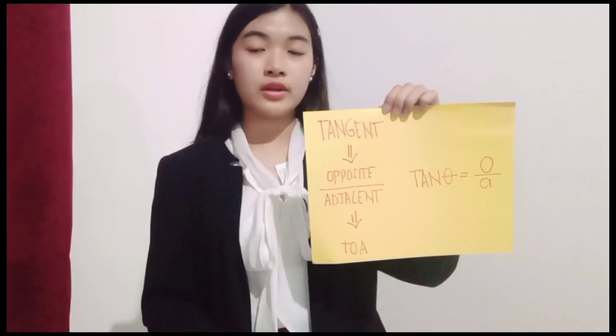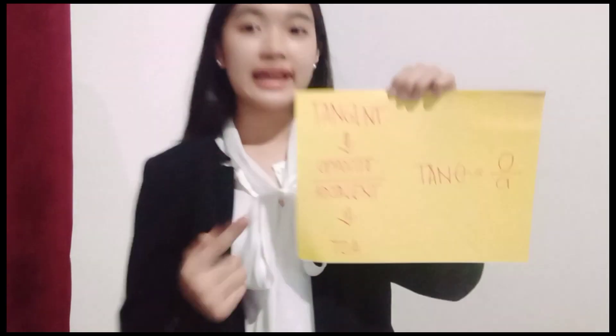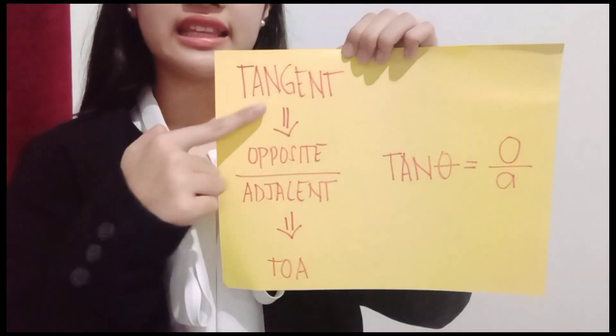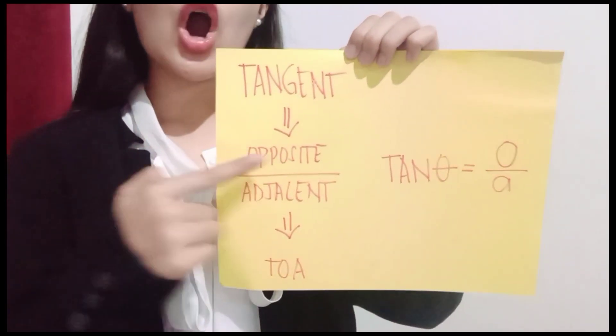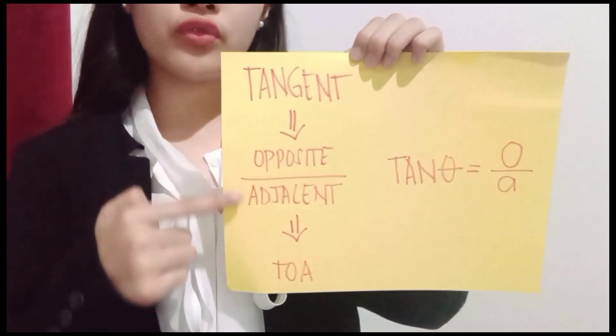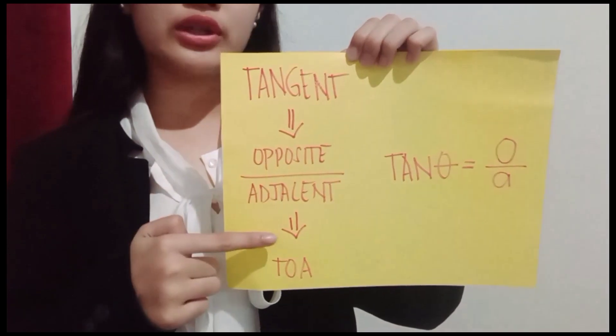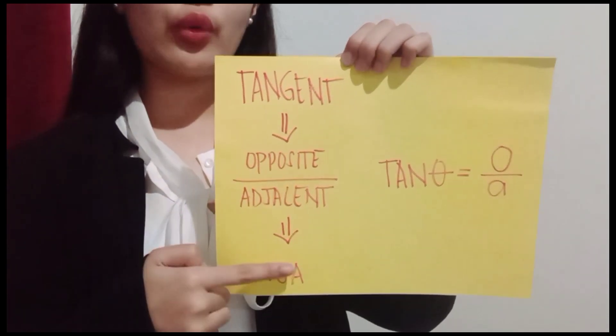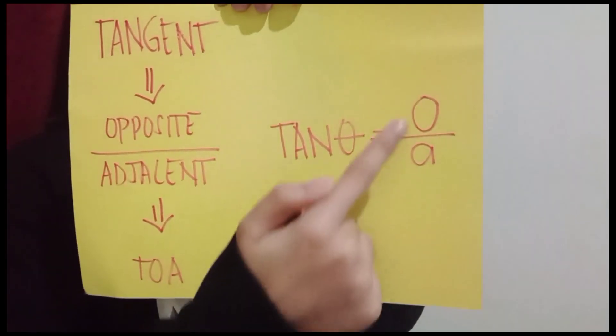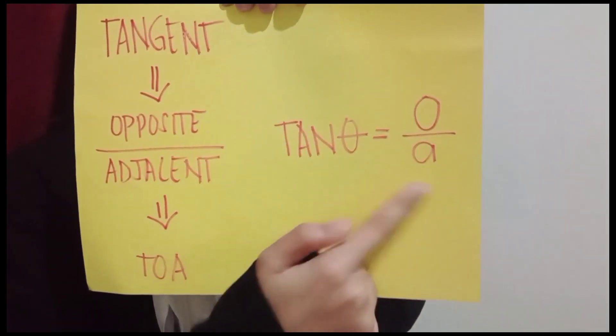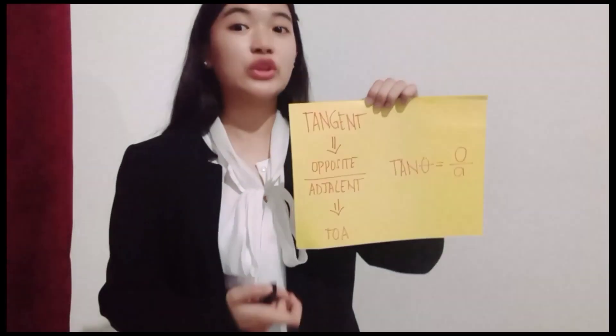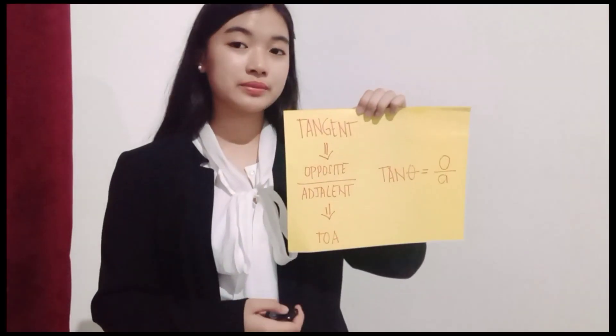And the last one — the TOA: tangent is equal to opposite over adjacent. Once you master this, SOHCAHTOA will be easy for you.